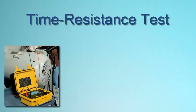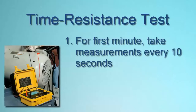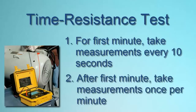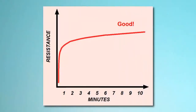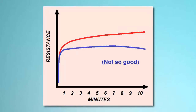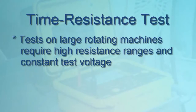Another insulation resistance measurement method is the time resistance test, also referred to as the dielectric absorption test. It involves conducting a 10-minute test. For the first minute — during which absorption current will have the highest effect on resistance — measurements are taken every 10 seconds. After the first minute, measurements are taken once per minute. When you plot the results, you should see a curve that rises relatively rapidly at first and then continues to gradually rise throughout the testing period. If instead the curve is relatively flat or begins to turn down as the test progresses, moisture, dirt, or other factors may be compromising your insulation. Time resistance tests on large rotating electrical machinery, especially systems with high operating voltage, require high insulation resistance ranges and a very constant test voltage. Since this test provides meaningful results within a single 10-minute duration, it is relatively independent of temperature.